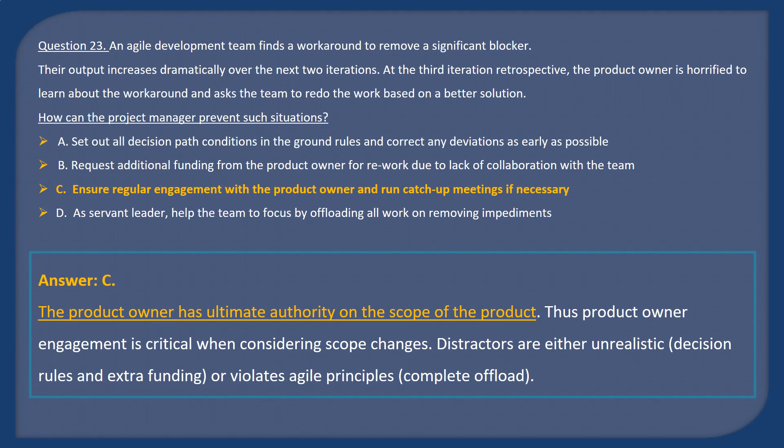Answer C. The product owner has ultimate authority on the scope of the product. Thus, product owner engagement is critical when considering scope changes. Distractors are either unrealistic — decision rules and extra funding — or violate Agile principles such as complete offload.